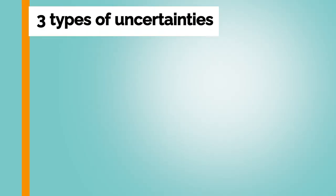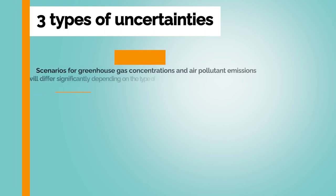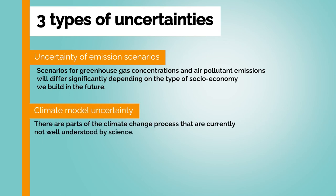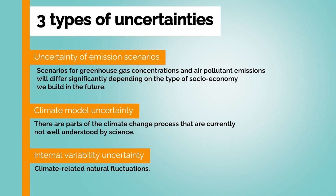For example, in future climate simulations, there are three types of uncertainties. Uncertainty of emission scenarios comes about because scenarios for greenhouse gas concentrations and air pollution emissions will differ significantly depending on the type of socio-economy we build in the future. Climate model uncertainty arises because there are parts of the climate change process that are currently not well understood by science. And finally, internal variability uncertainty is due to climate-related fluctuations — El Niño is a good example. These kinds of climate information are powerful tools to aid in avoiding or countering the effects of climate change, but it's very important to be mindful that there are always different levels of uncertainty.